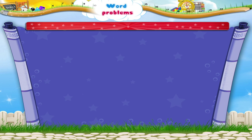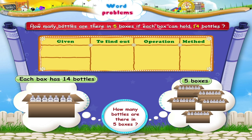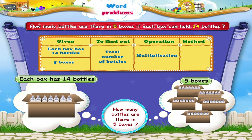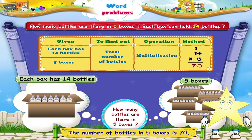One last problem. How many bottles are there in 5 boxes, if each box can hold 14 bottles? Here it is given that each box holds 14 bottles, and there are 5 boxes. The number of bottles in each box, which is 14, is multiplied by the number of boxes, which is 5. The number of bottles in 5 boxes is 70. Wasn't that fun, Starry? You have now learnt not only how to frame the multiplication word problems, but also how to solve them.